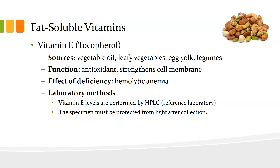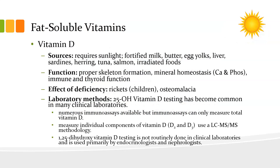Vitamin E, also known as tocopherol. Sources include certain vegetable oils, leafy vegetables, egg yolks, legumes, nuts, and seeds. It is a powerful antioxidant that strengthens the cell membrane. Deficiency of vitamin E leads to hemolytic anemia. Vitamin E levels can be measured by high performance liquid chromatography, and specimens also need to be protected from light after collection.